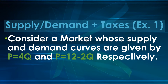Our first example is going to consider a market whose supply and demand curves are given by P equals 4Q and 12 minus 2Q respectively. How will the equilibrium price and quantity change if we put a $6 tax placed on the sellers? What if there's a $6 tax placed on the buyers? Does this make any difference?